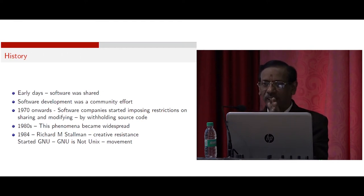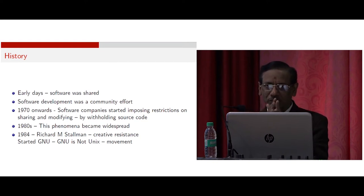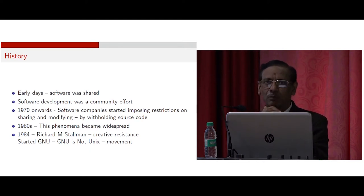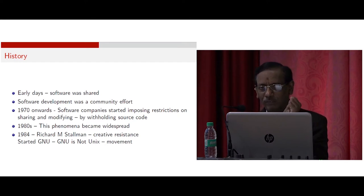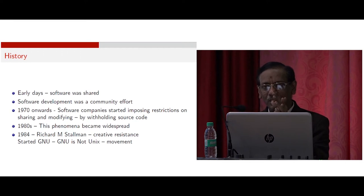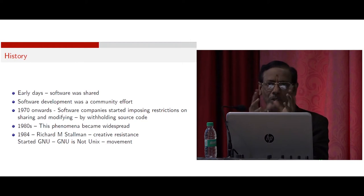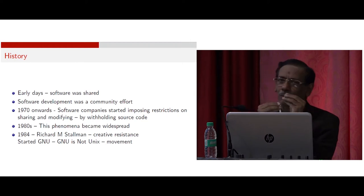ENIAC was created using vacuum tubes. Two persons — one mathematician and one electrical engineer, Eckert and McLean — built it. At that time, another computer genius, John von Neumann, when he saw this computer for the first time, thought that one or two computers of this type would be sufficient to solve all the problems of the world. So at that time, computers were very rare.